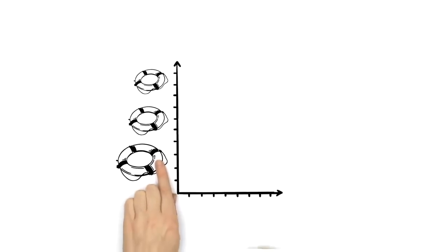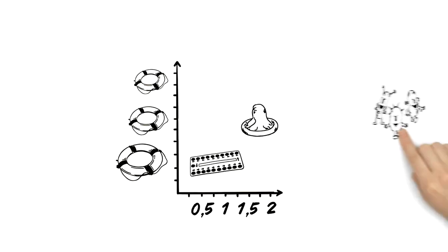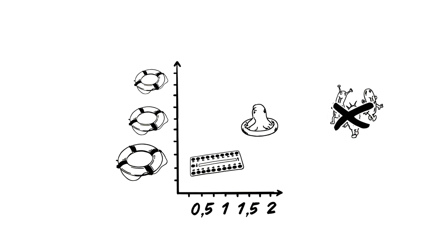Top of the list is the pill, with less than one pregnancy per year. When using a condom, the risk of getting pregnant is slightly higher. However, it is the only contraceptive that protects against sexually transmitted infections, for example, the immunodeficiency disease HIV.